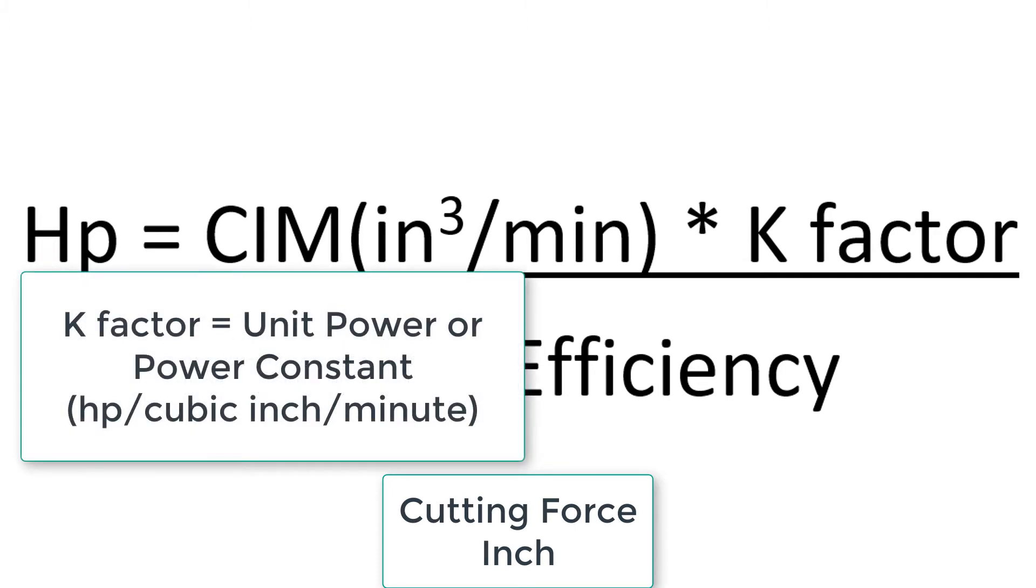K factors are also often called unit power or power constants and in inch units are horsepower per cubic inches per minute. These values can be found in the machinery handbook or other sources that supply such tables. The k factor assumes that a sharp cutting tool is used and it's directly related to the Brindell hardness of the material being machined.